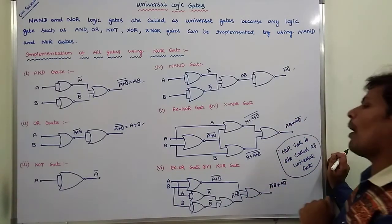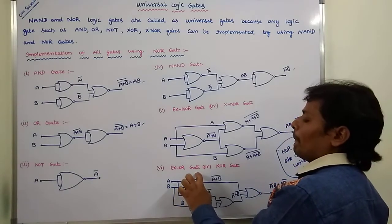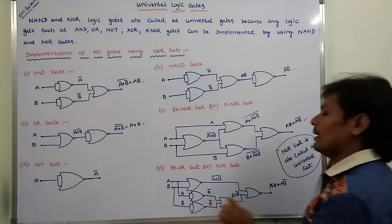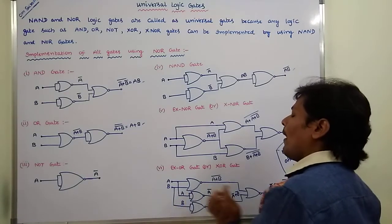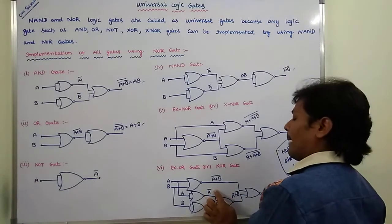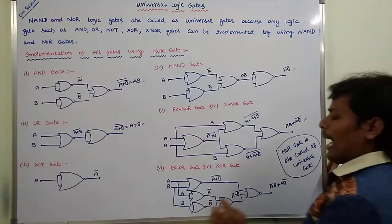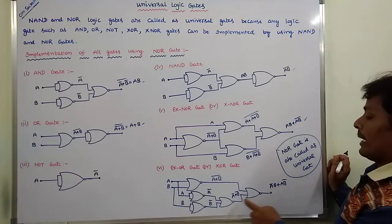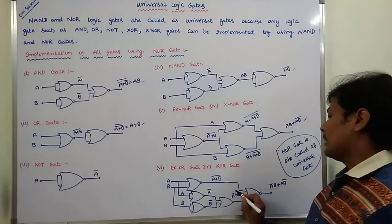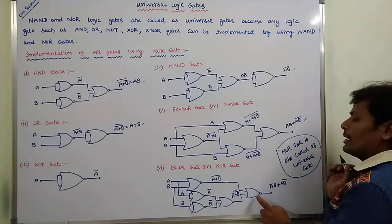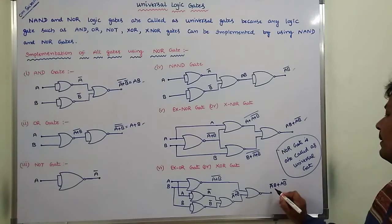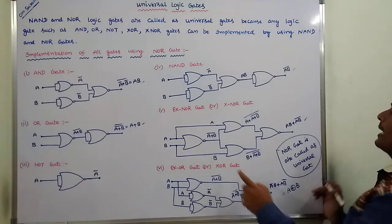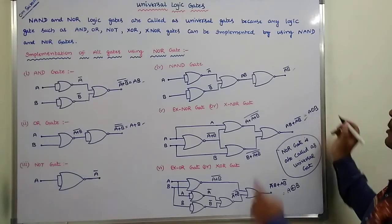Next, XOR gate or exclusive OR gate. A and B are two inputs applied to one NOR gate, then we are getting A plus B whole bar. A is input to another NOR gate as two inputs, then we are getting A bar output. B is applied to another NOR gate as two inputs, then we are getting B bar. This A bar output and B bar output applied to another NOR gate, we are getting A bar plus B bar whole bar. This output and this output can be sent to another NOR gate as two inputs, then we are getting A bar B plus AB bar. So this is the exclusive OR gate output.